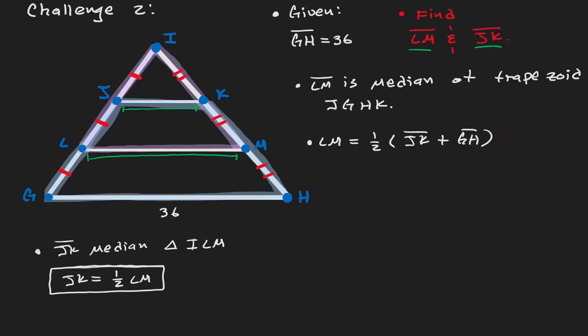Now let's start by plugging in what we know. We still do not know what LM is, so let's write it out as it is. But now notice that we have an expression for JK. JK, we can write it out as one half of LM, so let's do that. And GH, we know what it is. That has a value of 36.